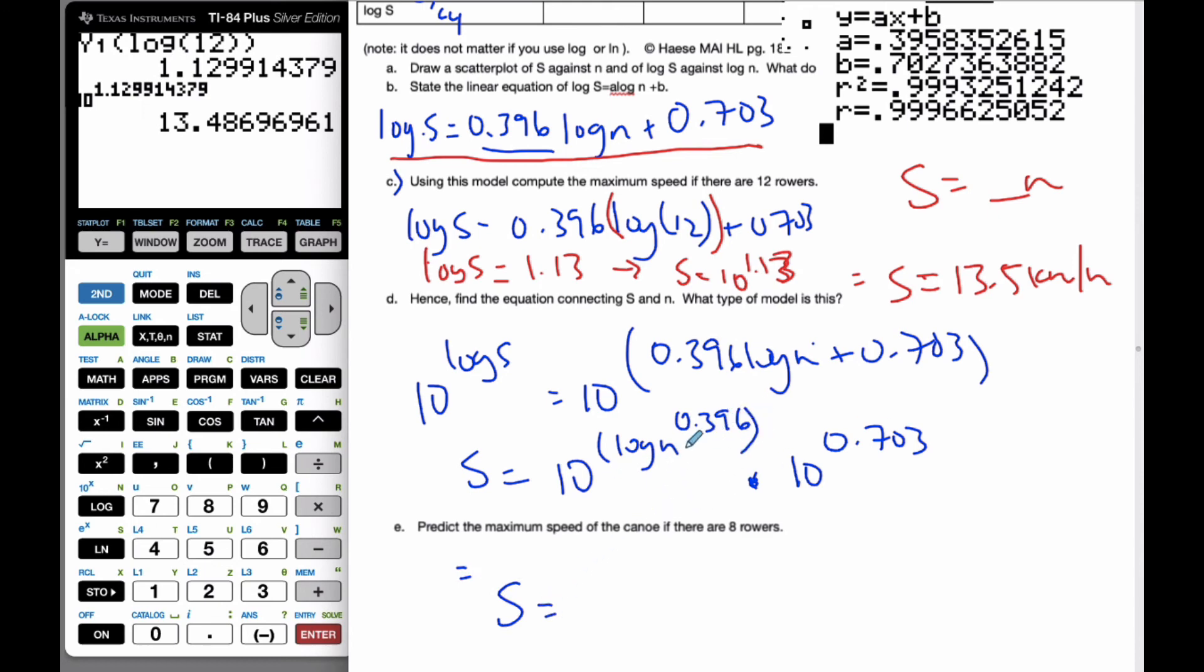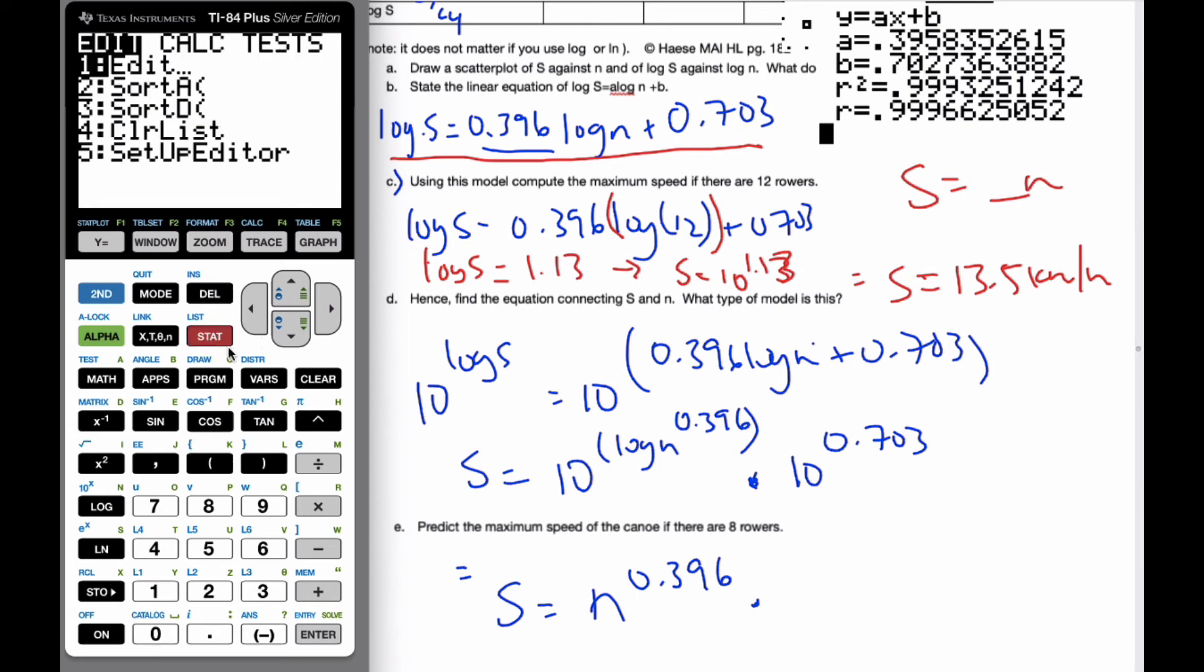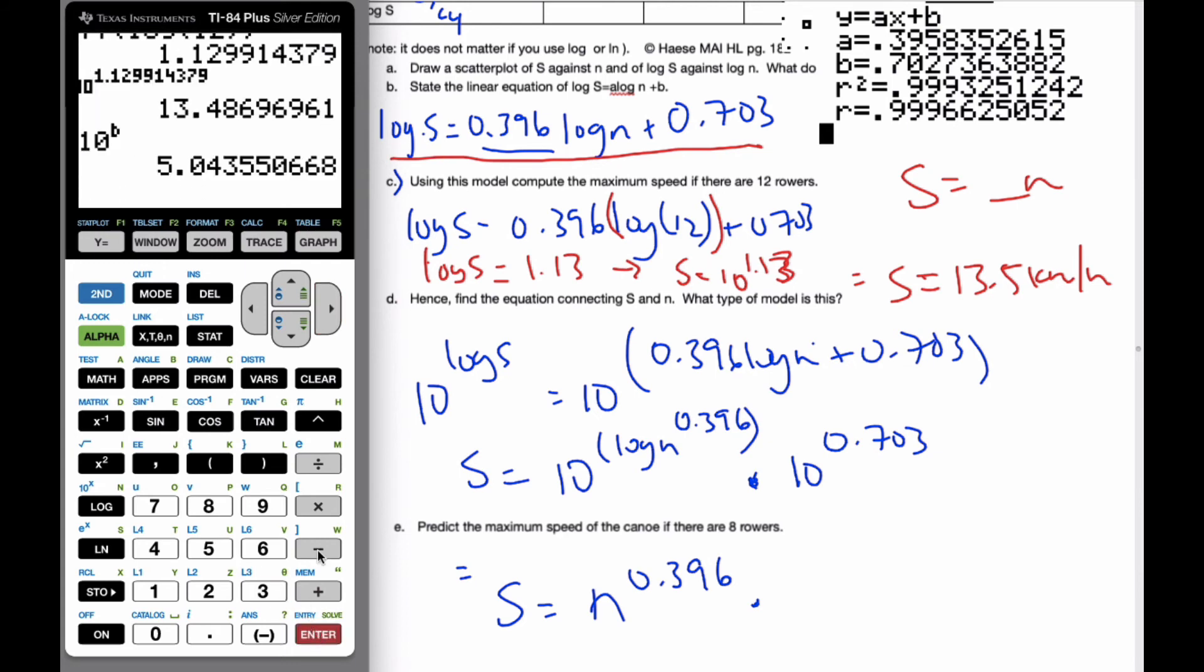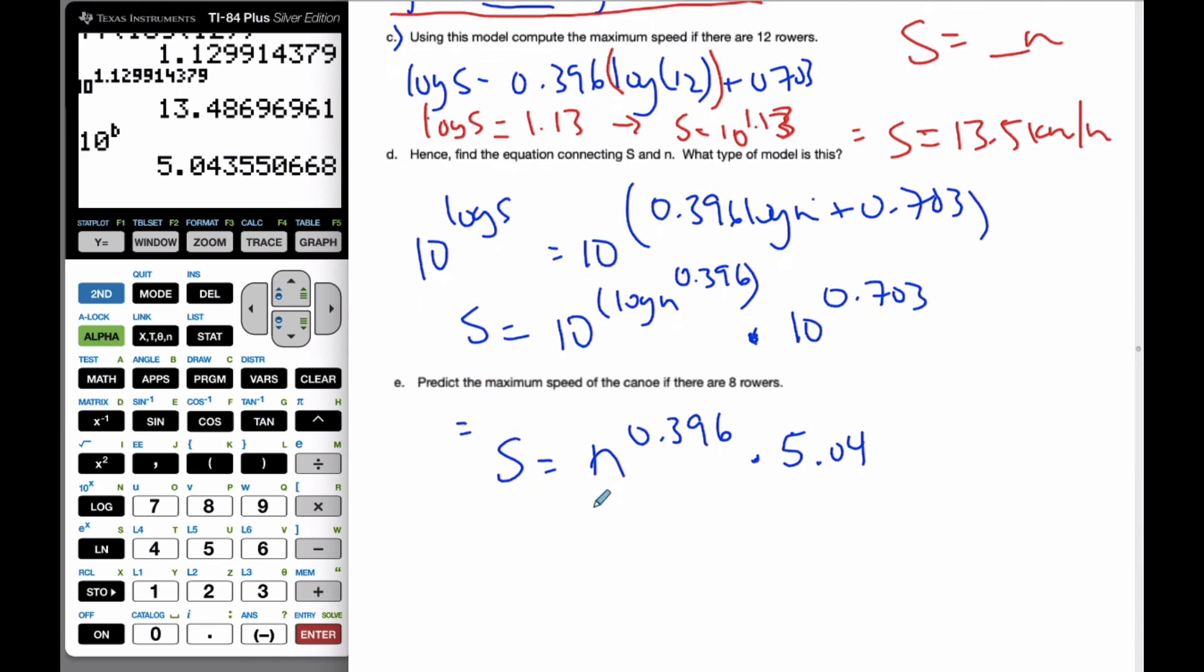When I do this here, I know that the log base 10 and the exponentials of 10 cancel out. And it's going to be N to the power of 0.396 times, well, 10 to the power of, I'm going to go 10 to the power of, well, this was my B value. I can go to variables. My statistic variables, number 5. My regression equation variables. And it was number 3. And that will be 5.04. So, what I can say now is that S is equal to 5.04 N to the 0.396.